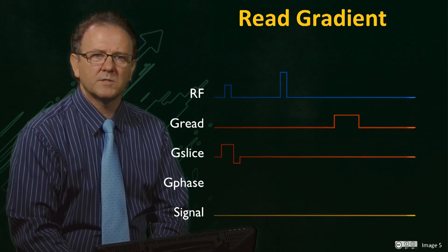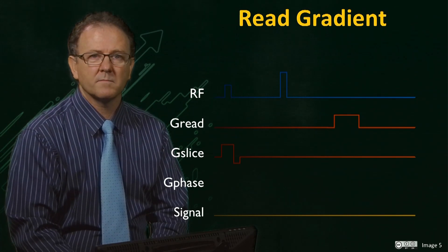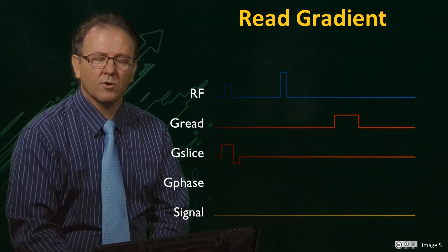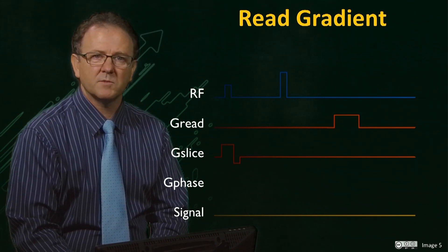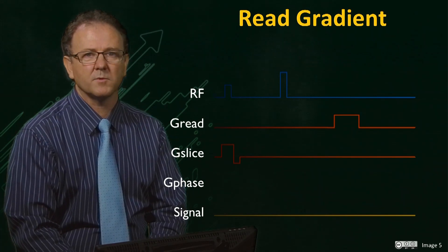Again, if we simply turn on the read gradient prior to echo formation, we see that no echo forms. As in the case of the slice gradient, when the read gradient is turned on before the echo, the transverse magnetisation will be rapidly dephased due to the linear field gradient that is applied across the sample.